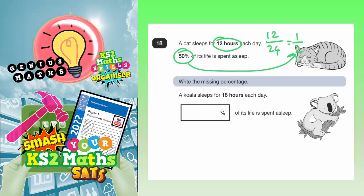Well, just like we did with a half and 12 out of 24 and got that for 50%, we need to figure out what 18 out of 24 is. So 18 hours for the koala is like 18 out of 24 hours in a day. Well, let's simplify that fraction first.